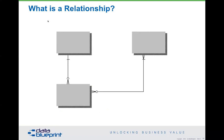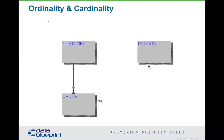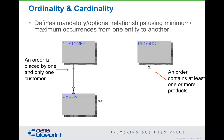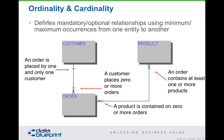Let's look at relationships. A relationship is a natural association between two or more entities. We talk about ordinality and cardinality — mandatory versus optional relationships and minimum and maximum occurrences. For example, using information engineering notation, a single customer can place multiple orders. However, a customer can also place zero orders. Why is that important? Because if you define a business rule that a customer must place an order, you won't show up in the customer database until you've actually purchased something — which means you can't pre-market to anybody. An order contains at least one or more products.